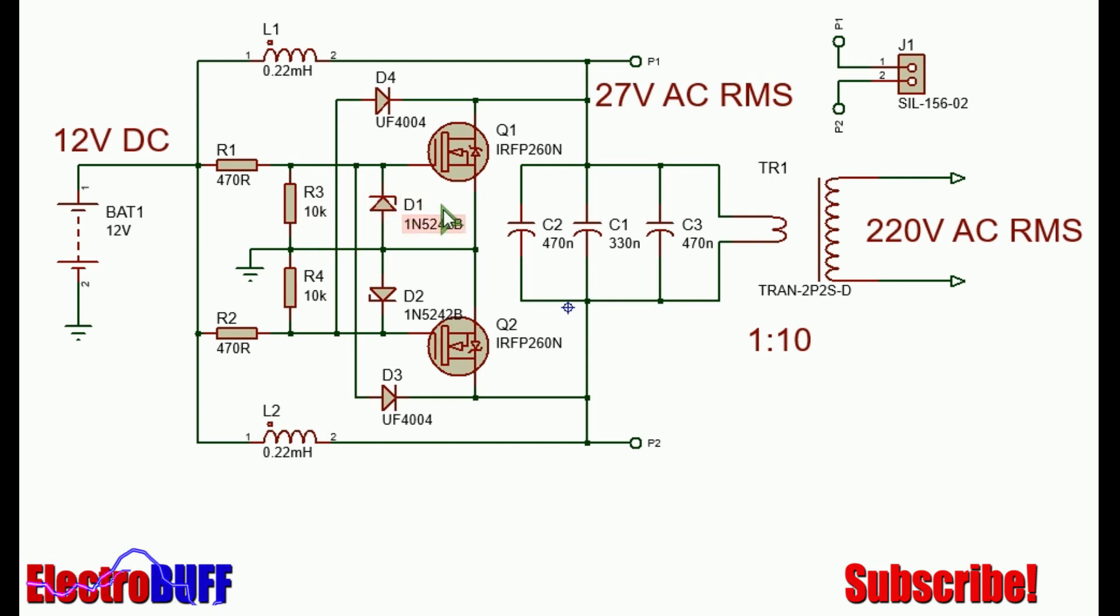There are 12V zener diodes that protect the gate and source of each of the MOSFETs. This ensures that in case you use more than 12V to power the inverter, the gate source voltage does not exceed 12V as it can damage most MOSFETs.